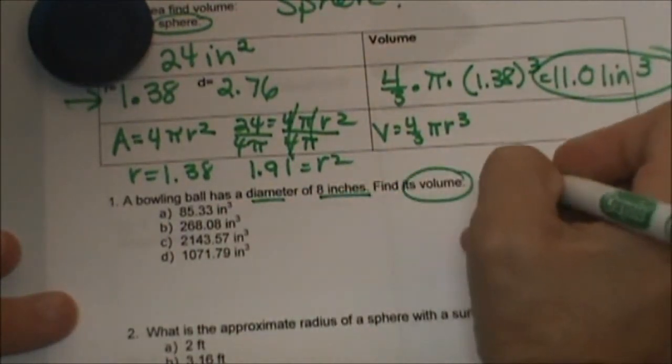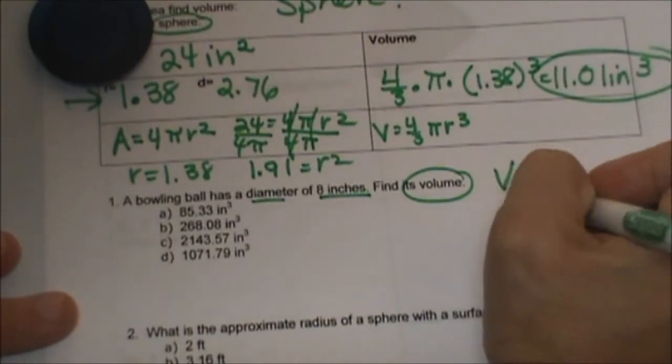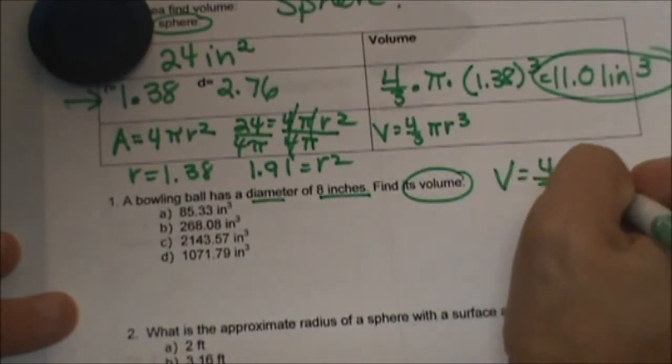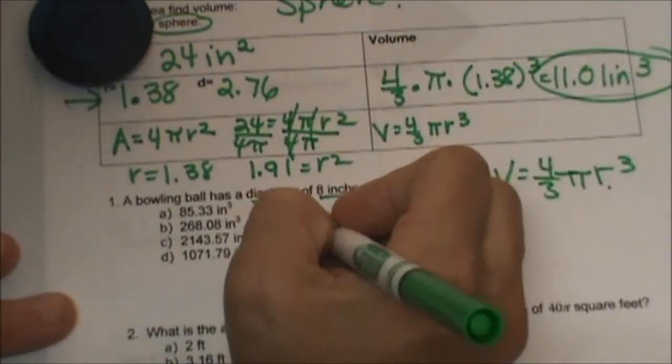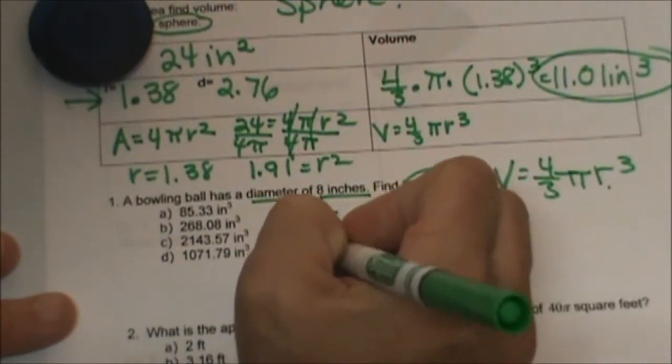Asking for volume, so always write the formula down: 4/3 π r³. Our radius, diameter is 8 so our radius must be 4.